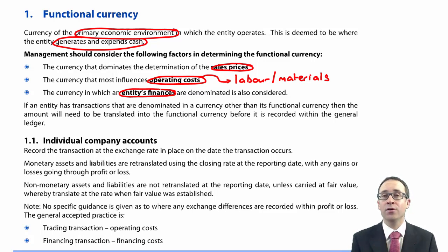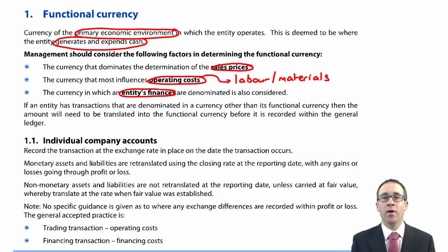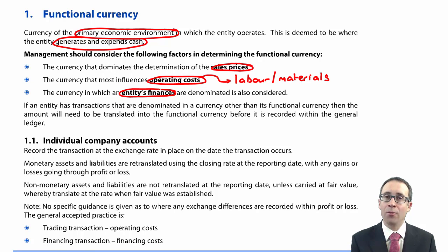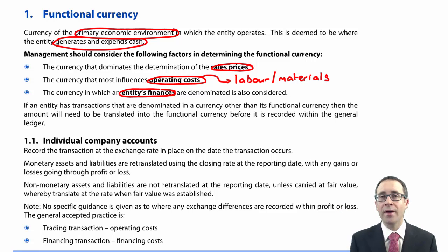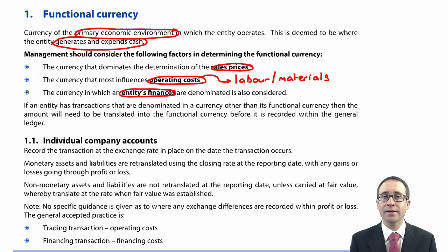This topic could and has made up brilliant small parts of a question — whether a small part of question one or part of question two or three — specifically discussing what the functional currency is and why for a particular entity. Be aware: not everything in the exam is numbers. The narrative aspect will come with practice, and this is one of the good narrative topics to get yourself started in any question — helpful for understanding how to write a narrative answer.